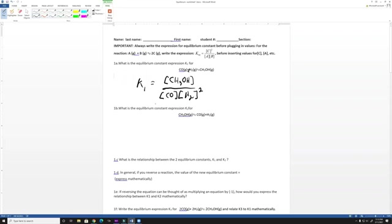Then we're gonna do the same thing for 1B, which asks for the equilibrium constant K2 for this reaction, which happens to be the opposite reaction as 1A. So K2 is going to equal H2 squared times CO over CH3OH.